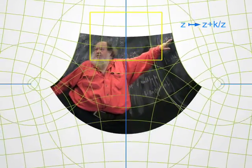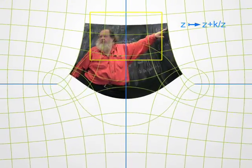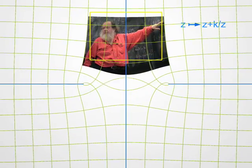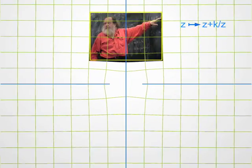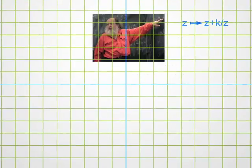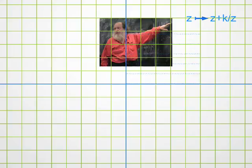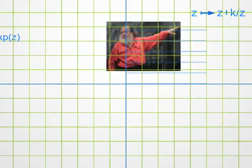If you look, for instance, at a button on my shirt, it keeps a circular shape. We say that these transformations are conformal, or holomorphic. Rather complicated Latin and Greek words for saying that they preserve shapes.